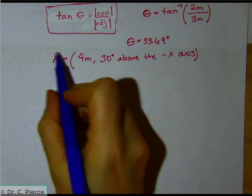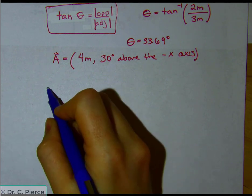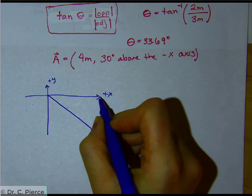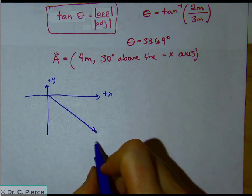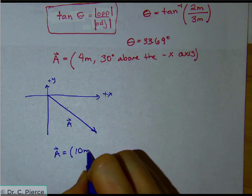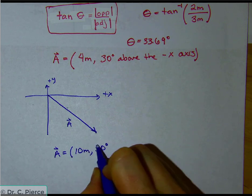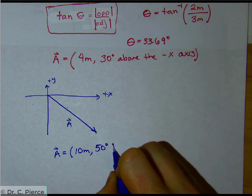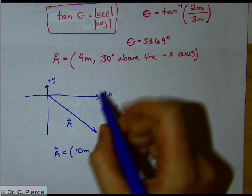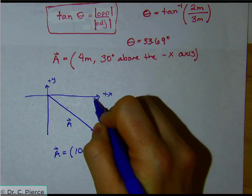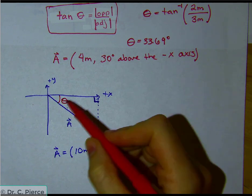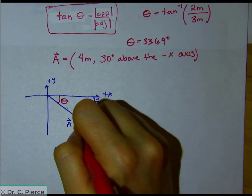Now what if we start with a magnitude and direction and need to break it into components? We have a positive x, positive y coordinate system, and a vector pointing down into the fourth quadrant. Let's call it vector a where a equals 10 meters, 50 degrees below the positive x-axis. We want to find how many meters it stretches horizontally and how many vertically. The angle theta — 50 degrees — is at the origin, and the hypotenuse is 10 meters.